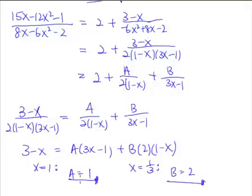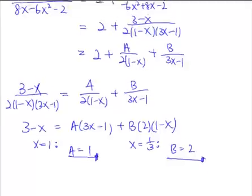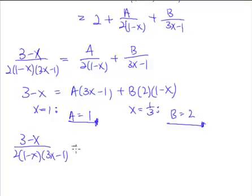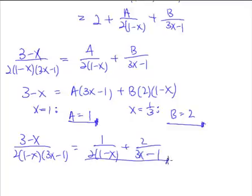Now that we have A and B, what have we found out? We have found out that the fraction (3 minus x) over [2(1 minus x)(3x minus 1)] equals 1 over [2(1 minus x)] plus 2 over (3x minus 1). But is this our final answer? Of course not — this is not our final answer.